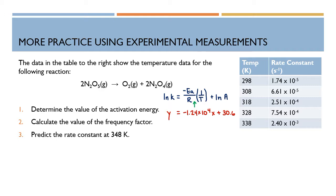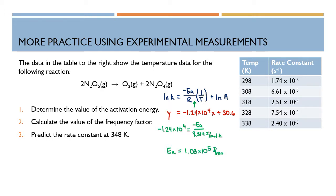The first thing I want to do is calculate the value of the activation energy. I'm going to set the m's equal to each other: negative 1.24 times 10 to the 4th equals negative Ea over 8.314 joules per mole K. The K cancels out, so the activation energy units will be joules per mole. With two negatives canceling, my activation energy is 1.03 times 10 to the 5th joules per mole.